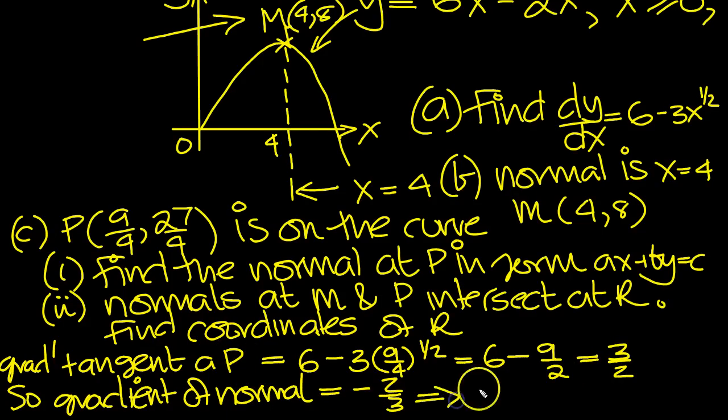So that tells us then that y minus the y coordinate, 27 over 4, is equal to the gradient of the normal, minus 2 thirds, times x minus 9 over 4.